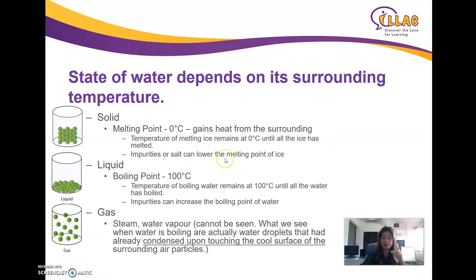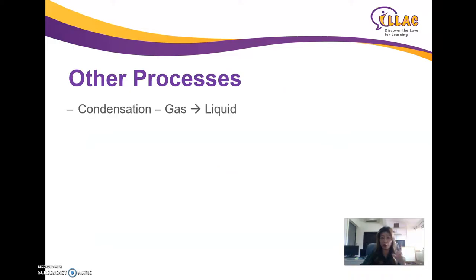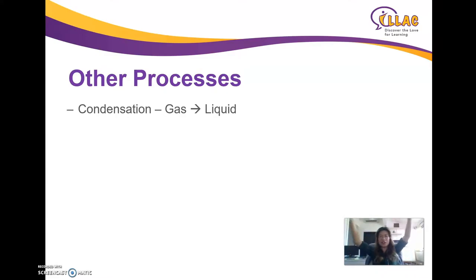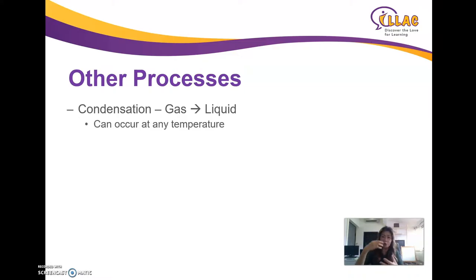This is a common misconception that children have. Now let's look at the process called condensation — children often can't spell it right, so cut it up: con, c-o-n; den, d-e-n; sa, s-a; shen, t-i-o-n. Condensation is when water goes from gaseous state and slowly loses heat, becoming water. When water vapor touches a cool surface, it loses energy, moves more slowly, and becomes liquid. This can occur at any temperature — as long as the water vapor touches a cooler surface, it will lose energy and condense.